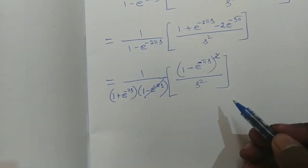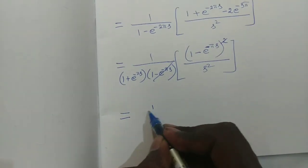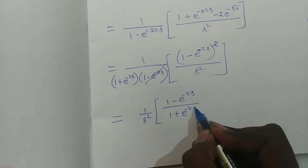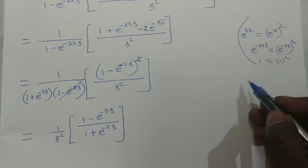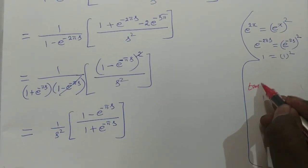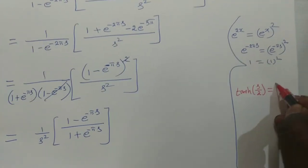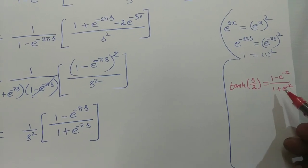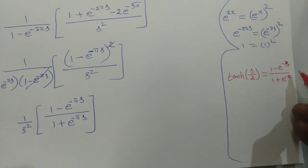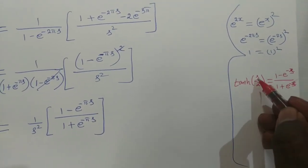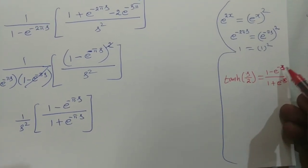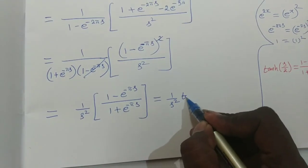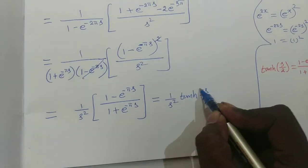After cancellation, the remaining expression is (1/s²) × (1 − e^(−πs)) / (1 + e^(−πs)). Using the formula tanh(x/2) = (1 − e^(−x)) / (1 + e^(−x)), with x = πs, this equals (1/s²) · tanh(πs/2). So the Laplace transform of the triangular wave is tanh(πs/2) / s².